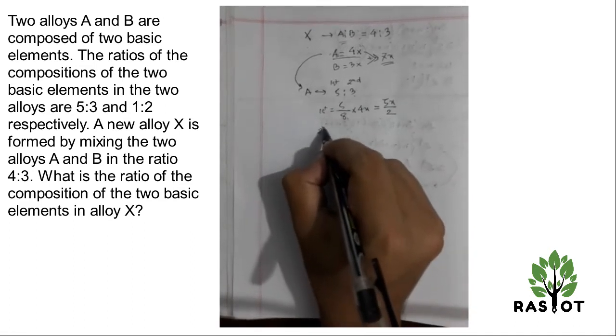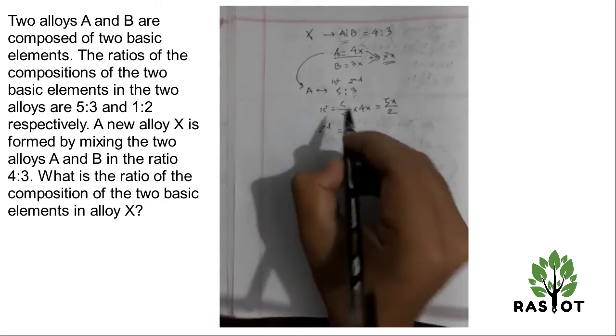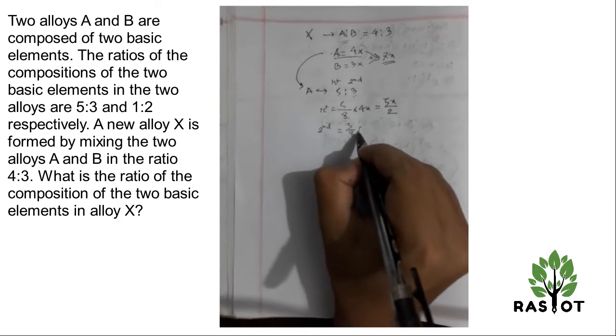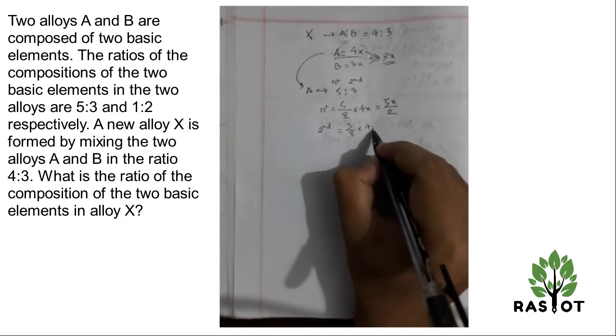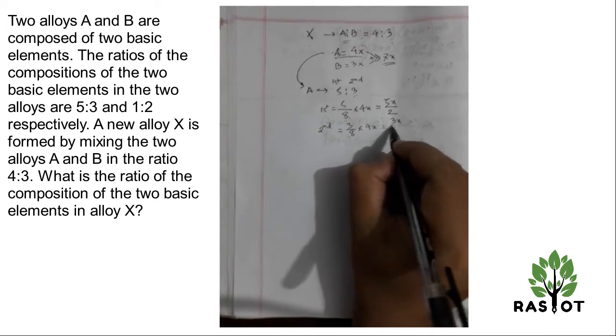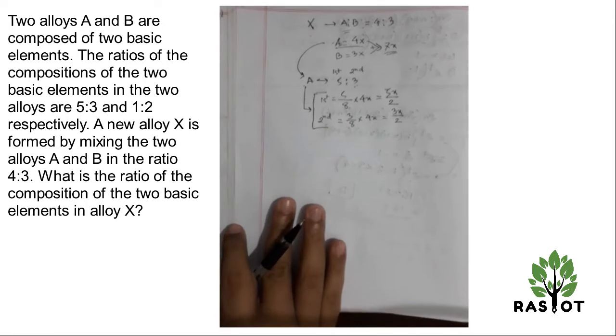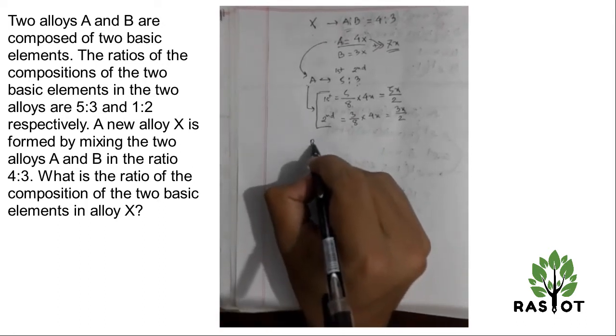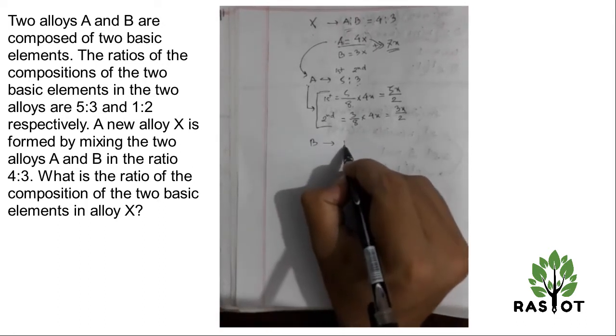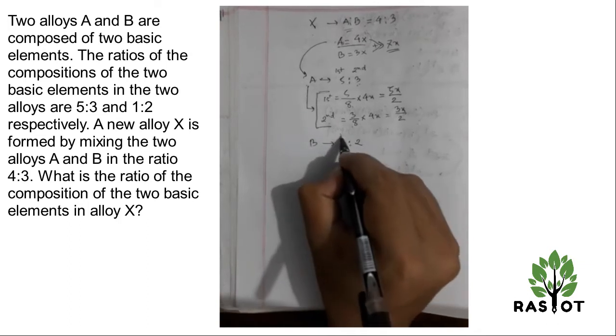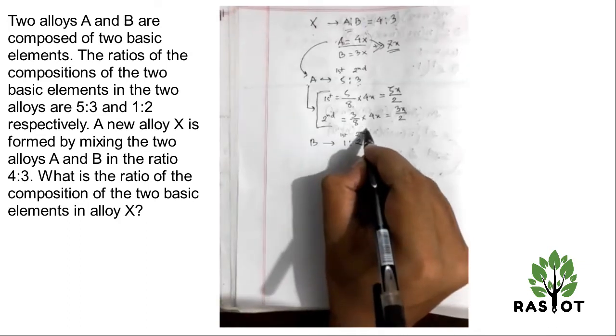The second element, similarly, 3 by 8 into 4X will give me 3X divided by 2. So that's the portion for A.